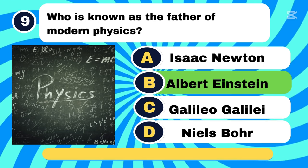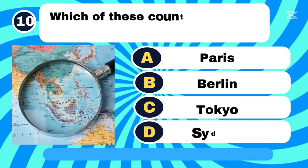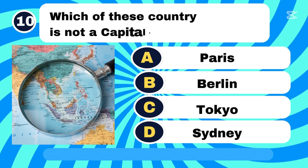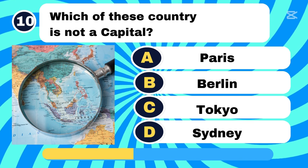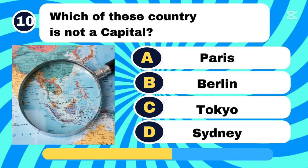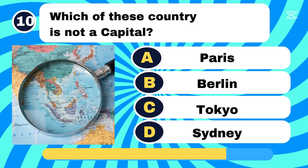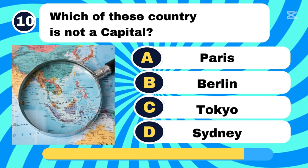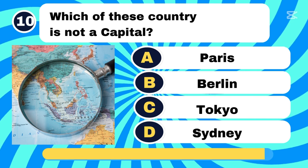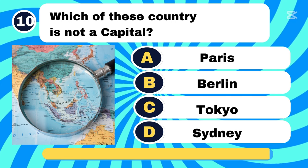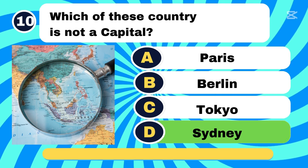Who is known as the father of modern physics? Letter B, Albert Einstein. Which of these cities is not a capital? Letter D, Sydney.